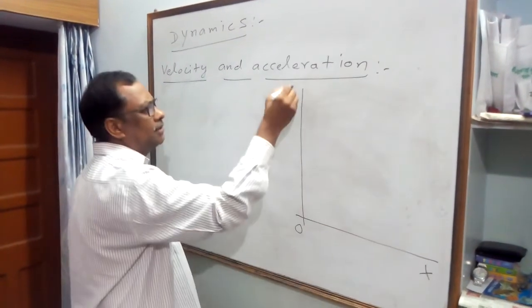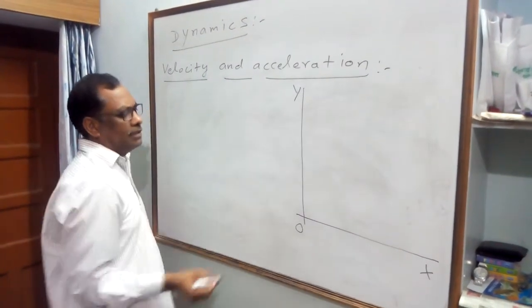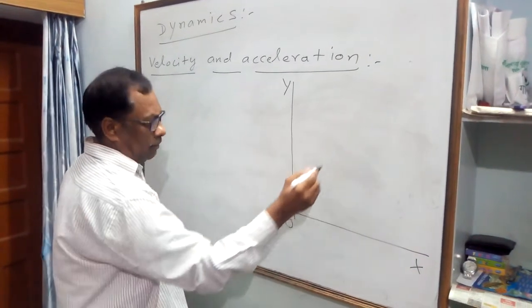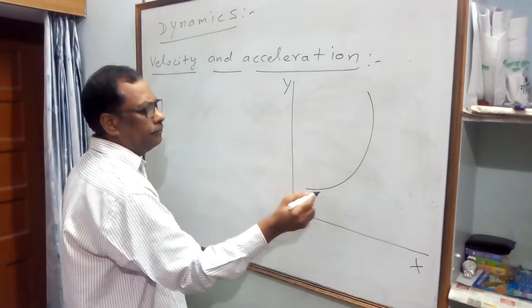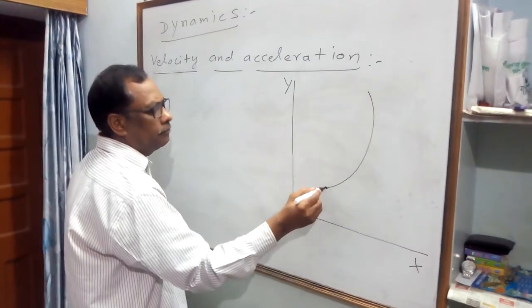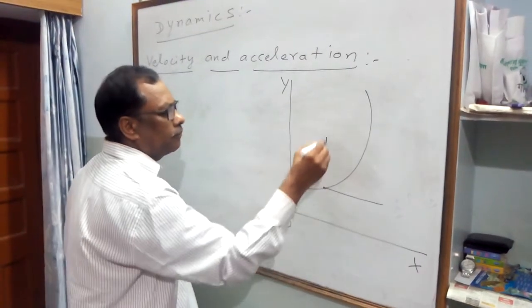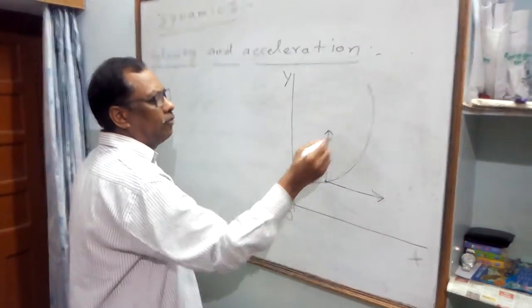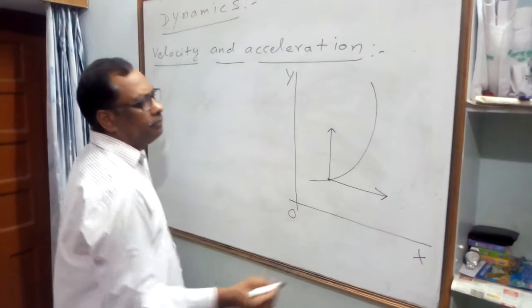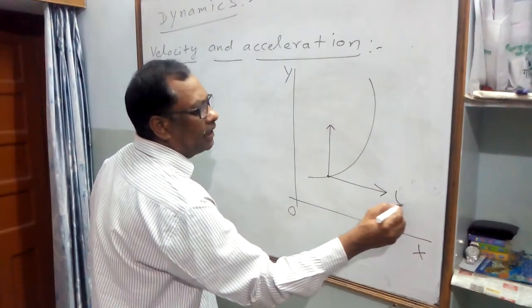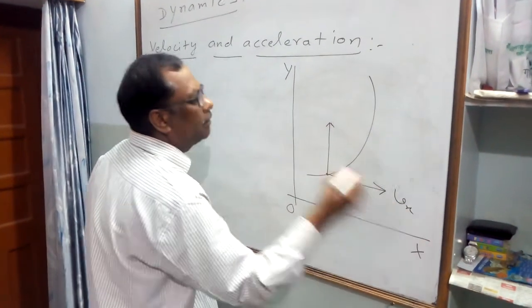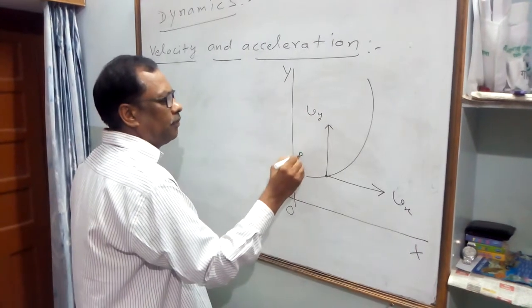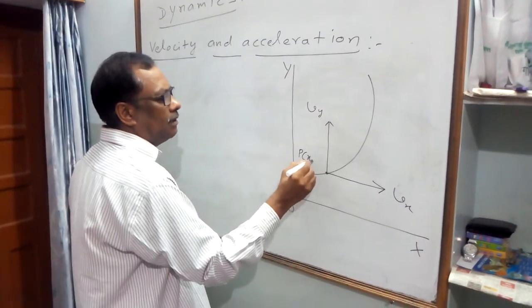There are two axes, X and Y, mutually perpendicular. Two components of velocity are Vx and Vy. This point is (X, Y).